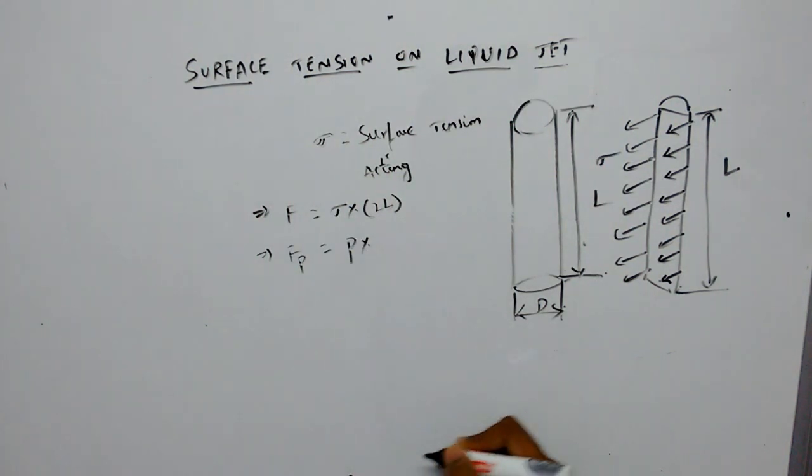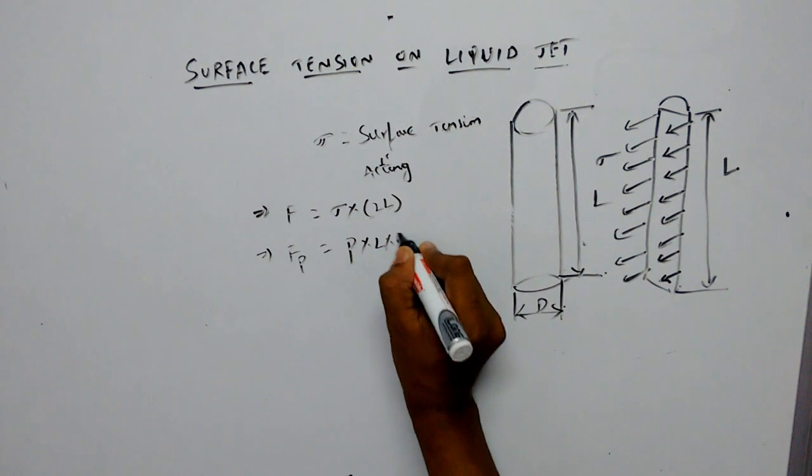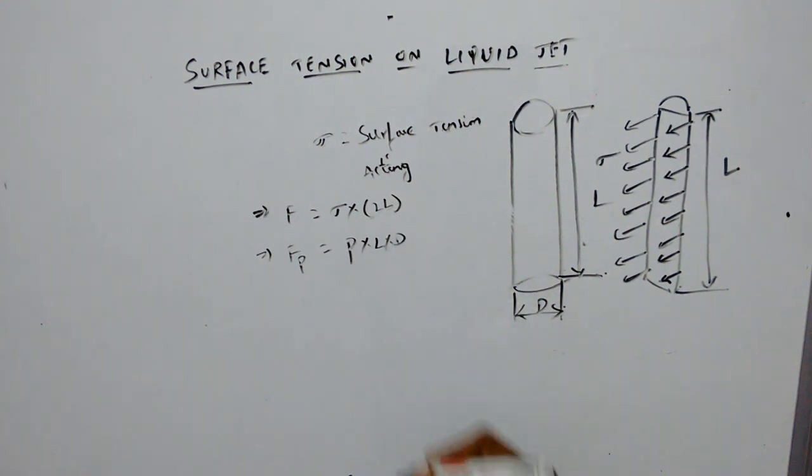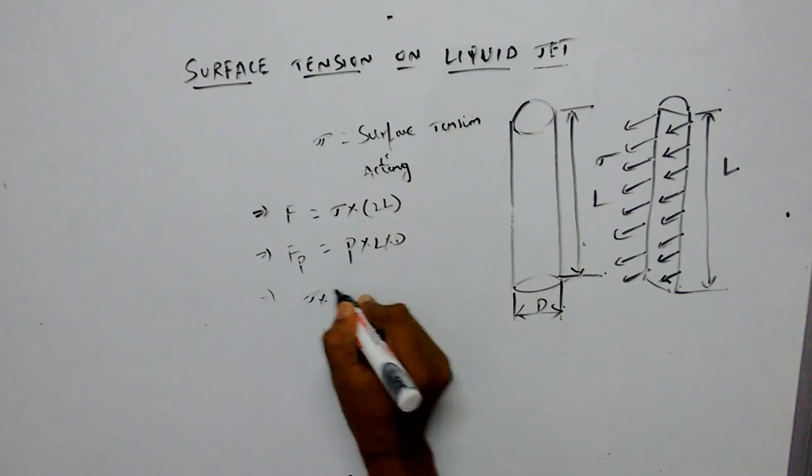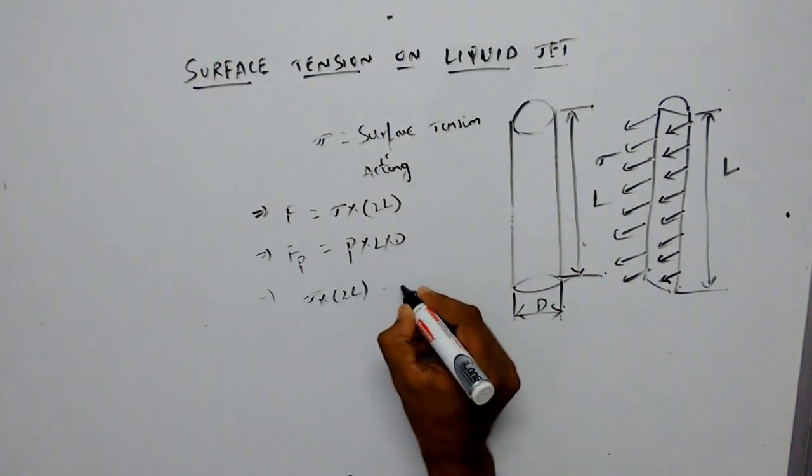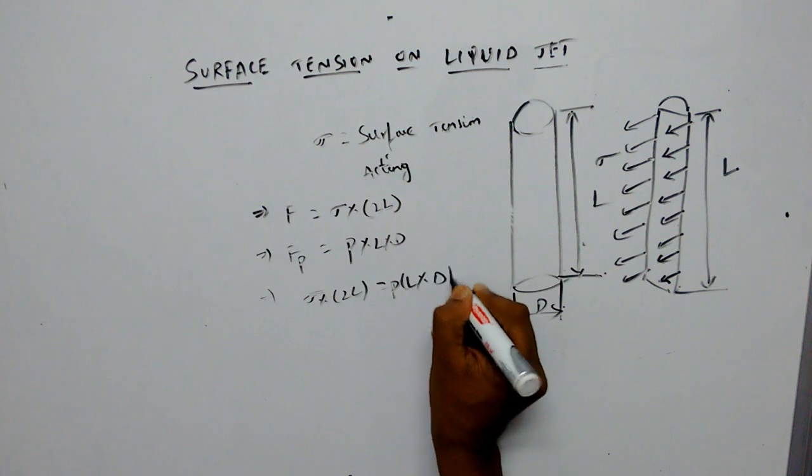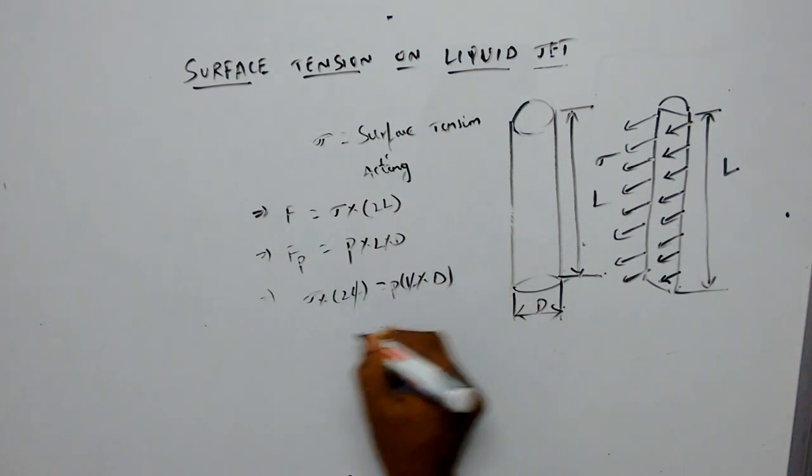Under equilibrium conditions, you can equate the tensile force and pressure force: σ × 2L = P × L × D. L will cancel out, so you can write P = 2σ/D.